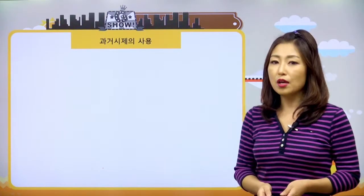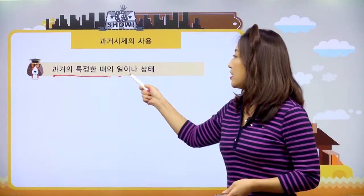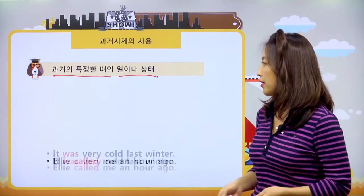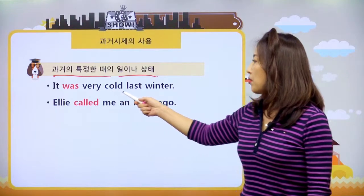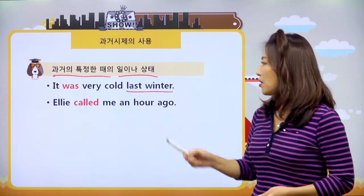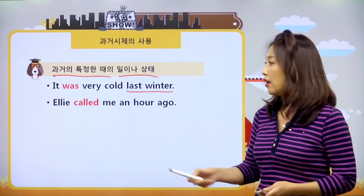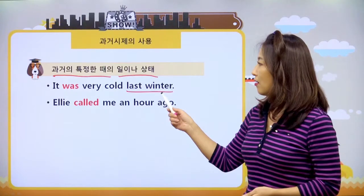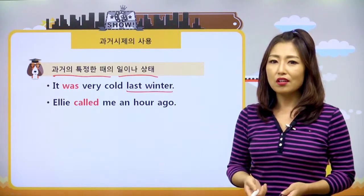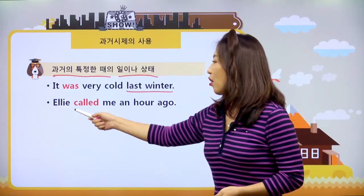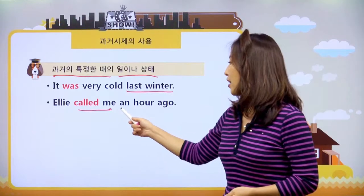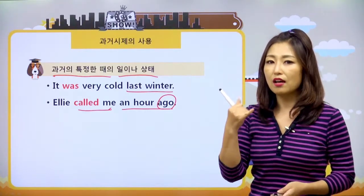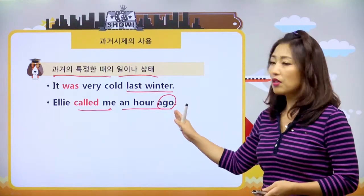과거에 특정한 때의 일이나 상태, 과거에 끝난 일이나 상태에 대해서 말할 때 어떻게 말하냐면, "It was very cold last winter." last winter는 작년 겨울이에요. It was very cold, 매우 추웠어요. 작년 겨울은 매우 추웠다. 과거니까 뭐뭐 이었다로 해석이 되겠네요. "Ellie called me an hour ago." ago는 뭐뭐 전에. An hour ago는 한 시간 전에. Ellie는 나한테 전화했다. 한 시간 전도 과거 일이니까 이렇게 사용할 수 있어요.